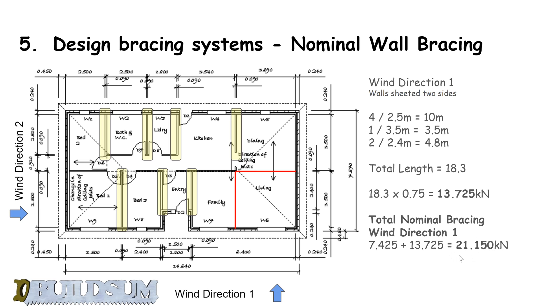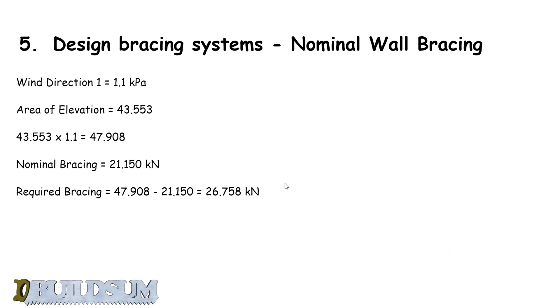We add those two amounts together, we get a total resistance from our nominal bracing in wind direction one of 21.150 kilonewtons. We required 47.908 kilonewtons, so we minus the 21—it's less than half so we don't have to worry about the 50 percent rule. We still require 26.758 kilonewtons of resistance in wind direction one. That's wind direction one done. In the next video I'll have a look at wind direction two.